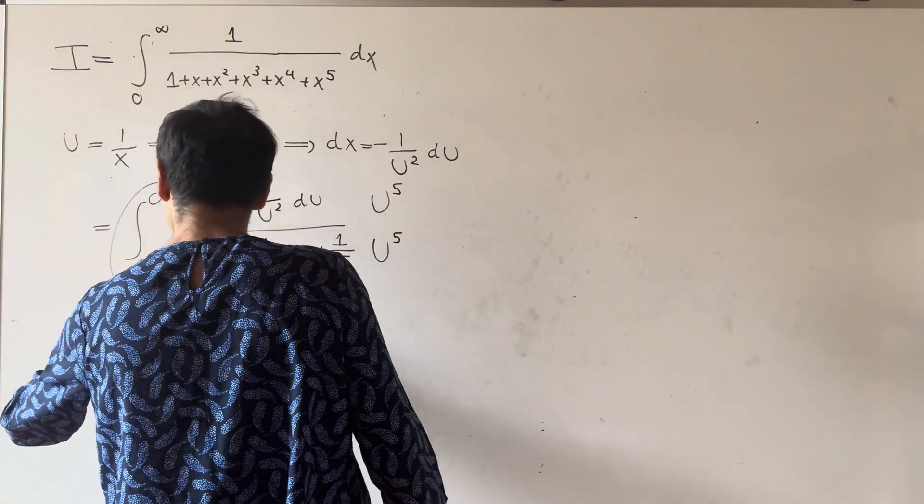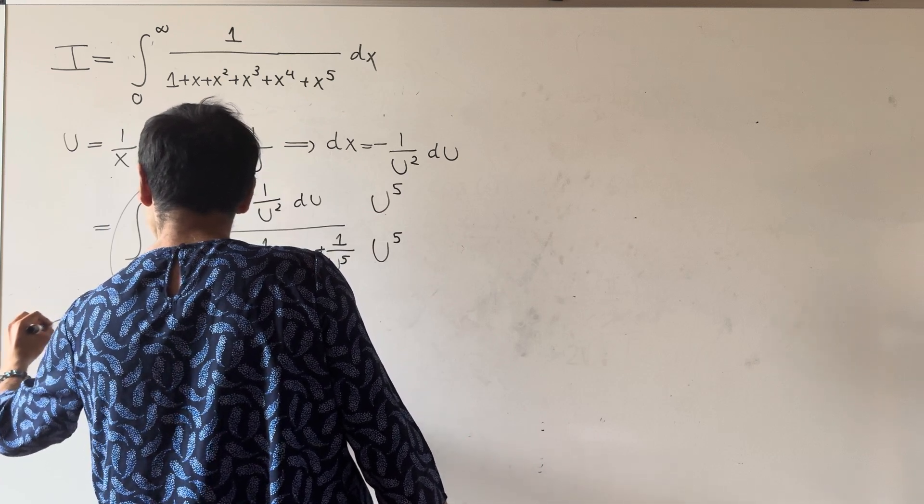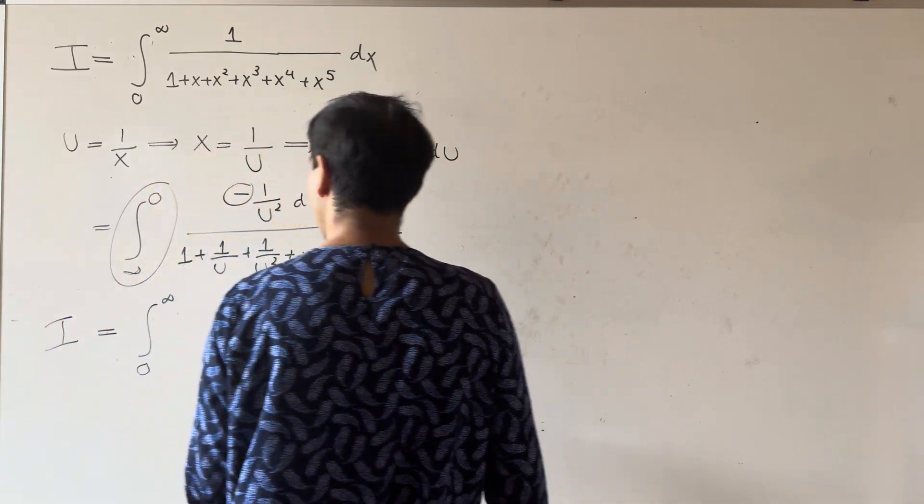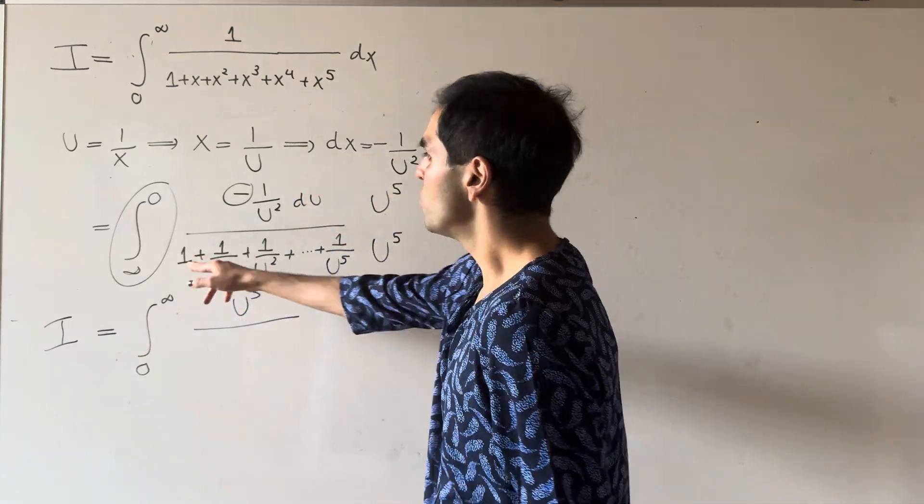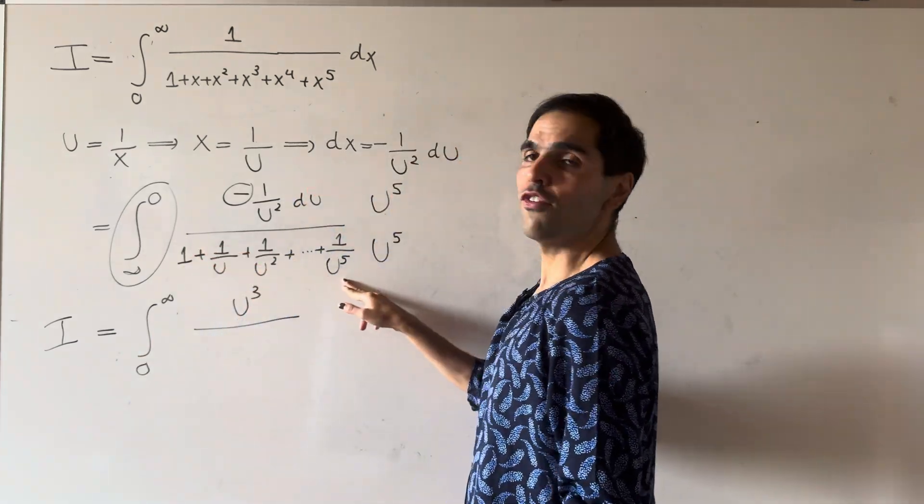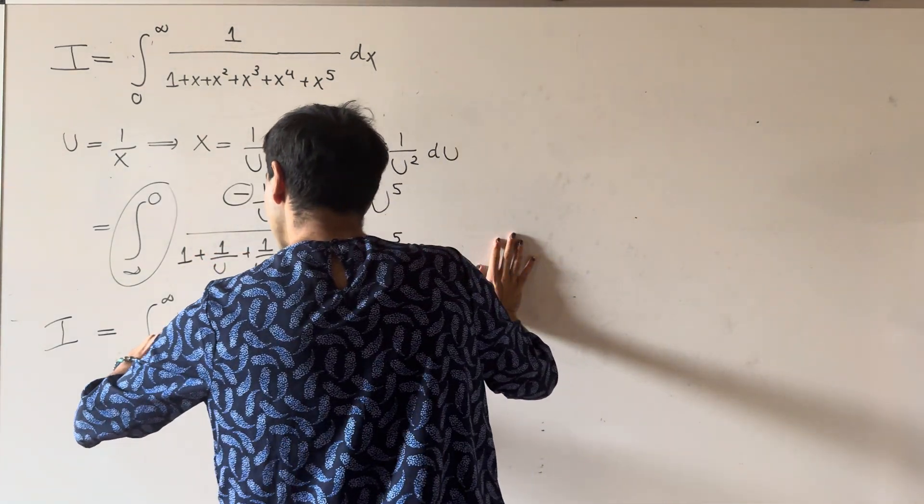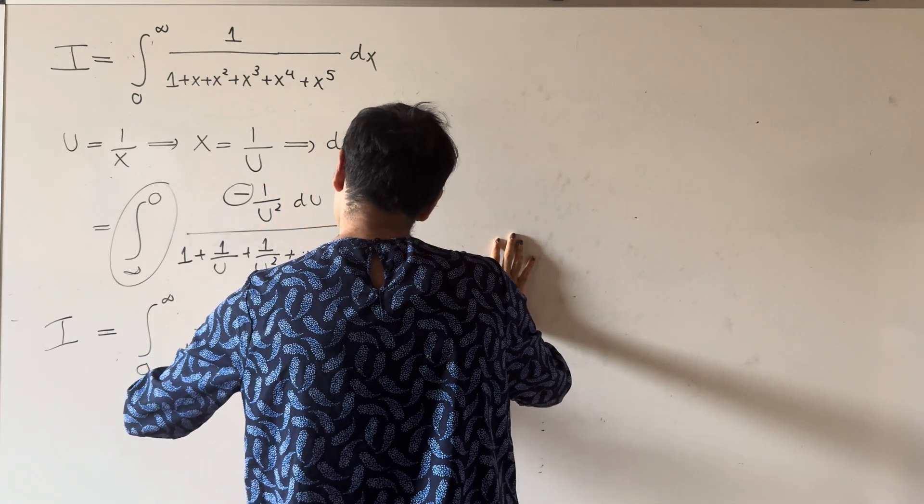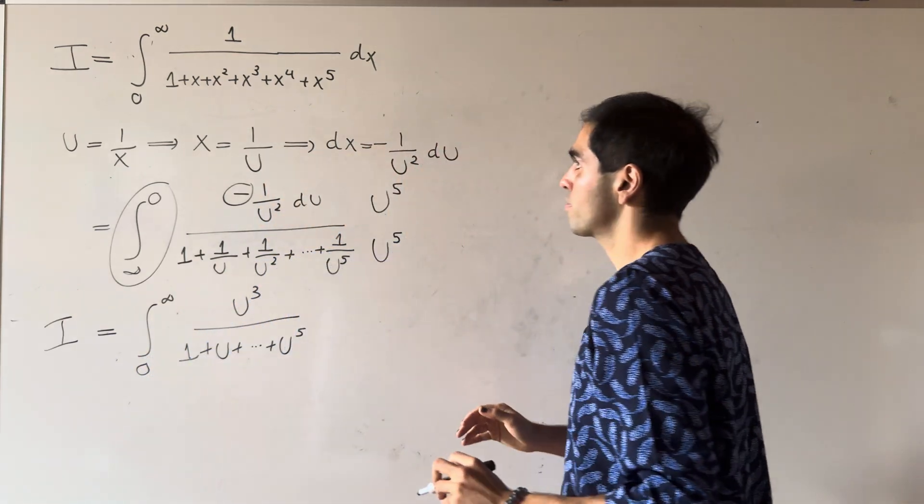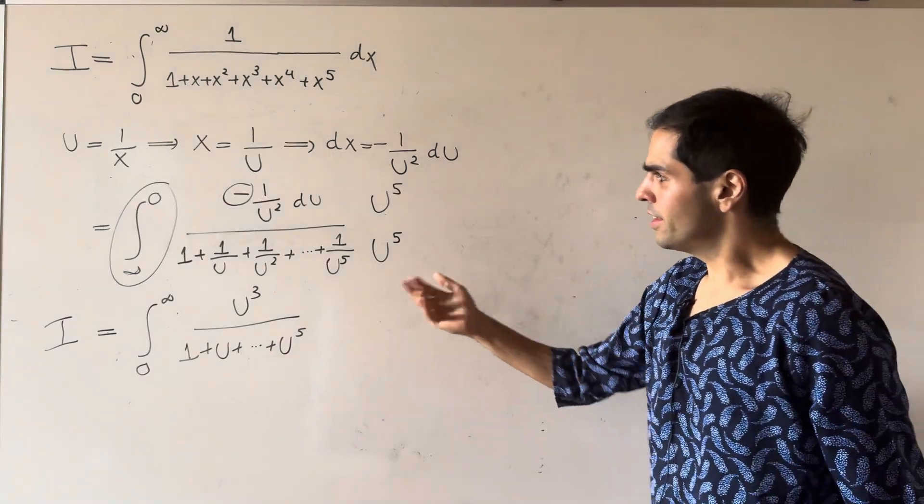And then, in the end, what we get is that the same integral is the integral from 0 to infinity of u cubed over u to the 5th plus u to the 4th up to 1, which is the same thing as 1 plus u dot dot dot up to u to the 5th, du.